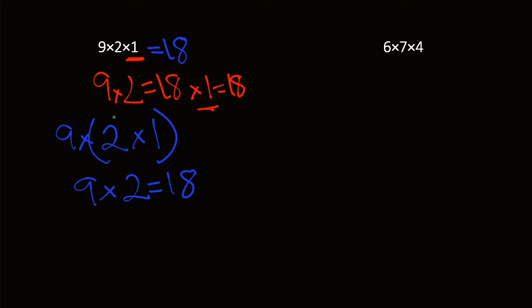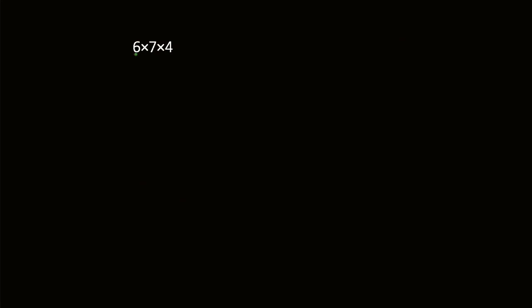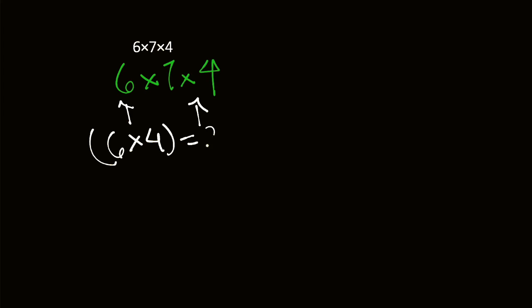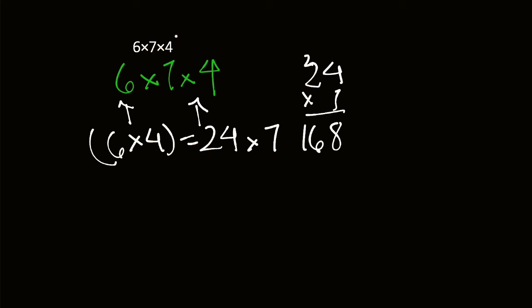Let's move on to our last example. We have 6 times 7 times 4. I'm going to group 6 and 4 this time, because even though they're not right next to each other, we can still group them. 6 times 4 is equal to 24. Then 24 times 7 — let's work it out: 4 times 7 is 28, carry the 2, we get 168.